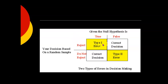Rejecting the null hypothesis when it's true is a type 1 error — that's where you say there is a difference, but really there isn't. And not rejecting the null hypothesis when it's false is a type 2 error — that's saying we can't be sure there's a difference, we can't rule out that it's just random chance, but there really is a difference.